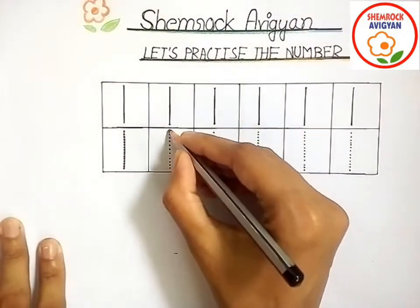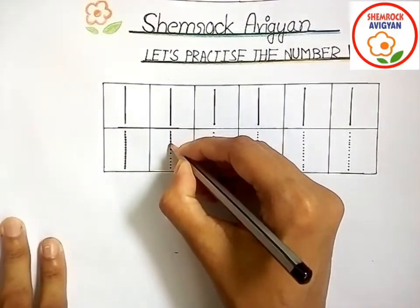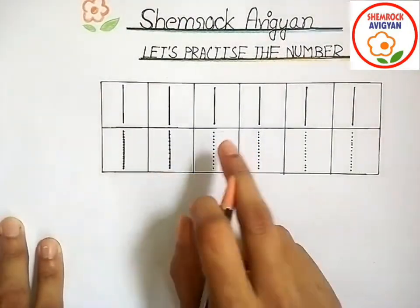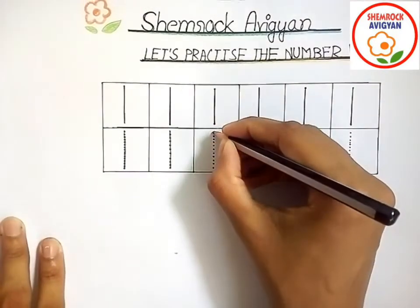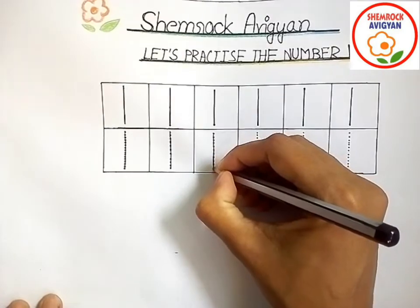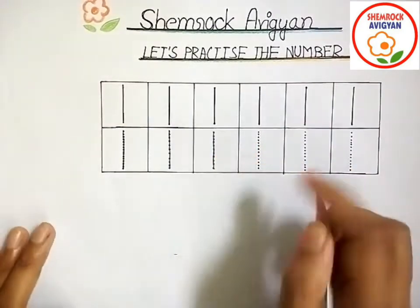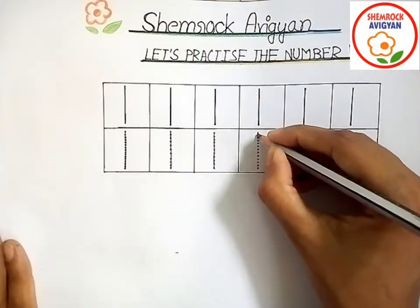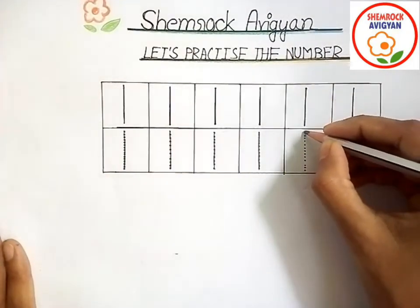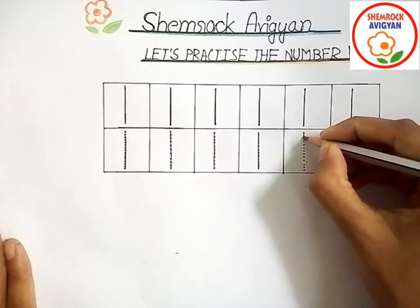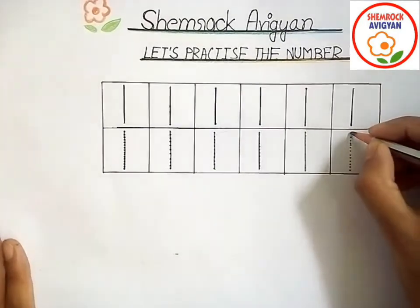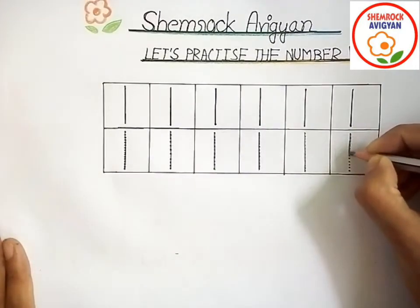You have to join all the dots like this. This is the number 1. Come on, let's do it together. Watch — I'll show you how to do it first. Now you also do it with me. Join slowly, slowly.